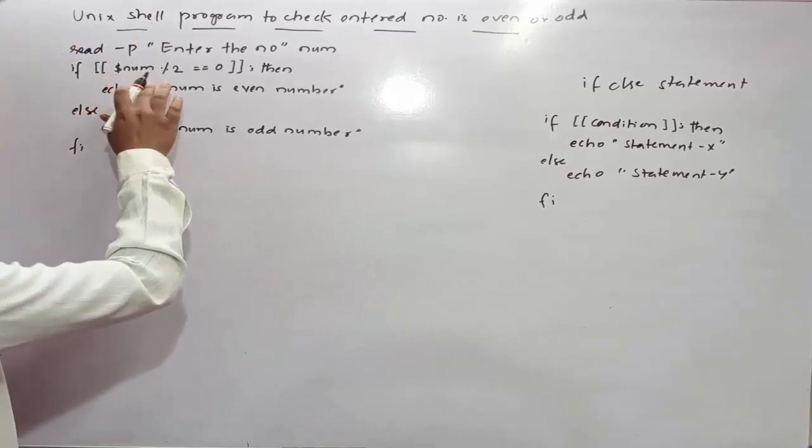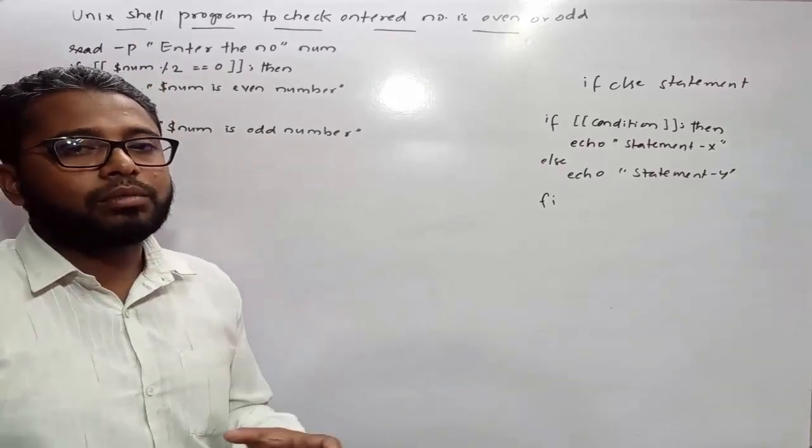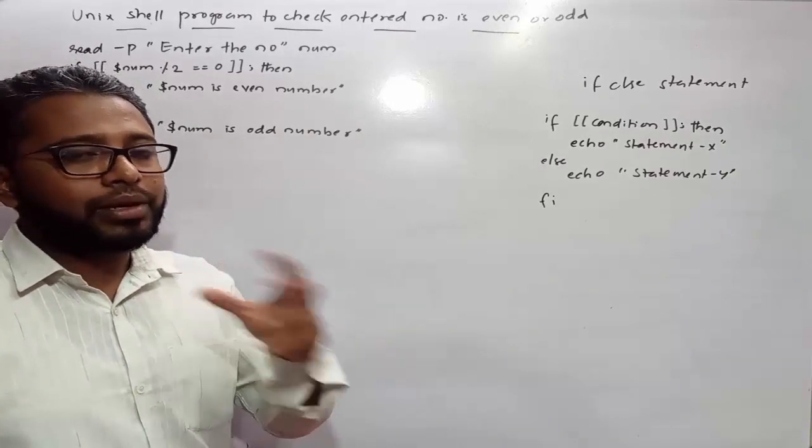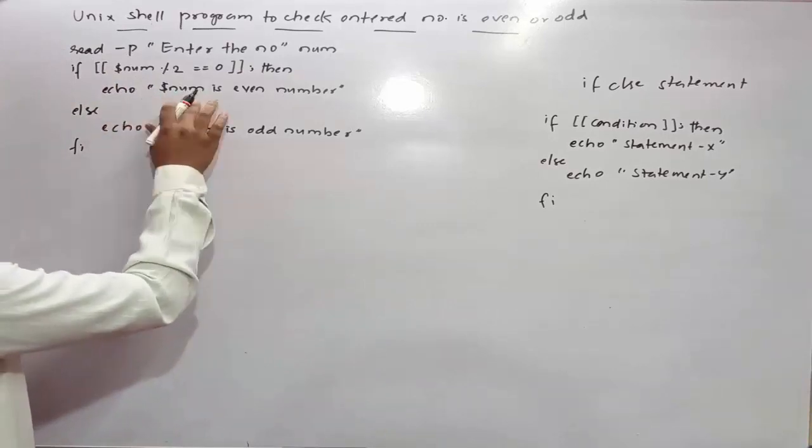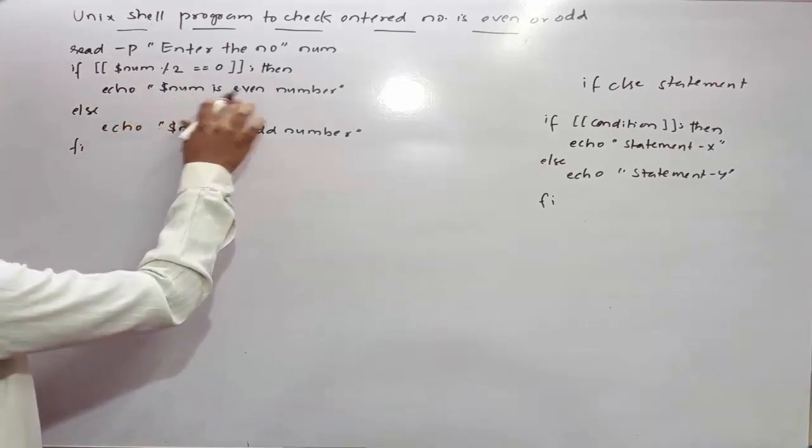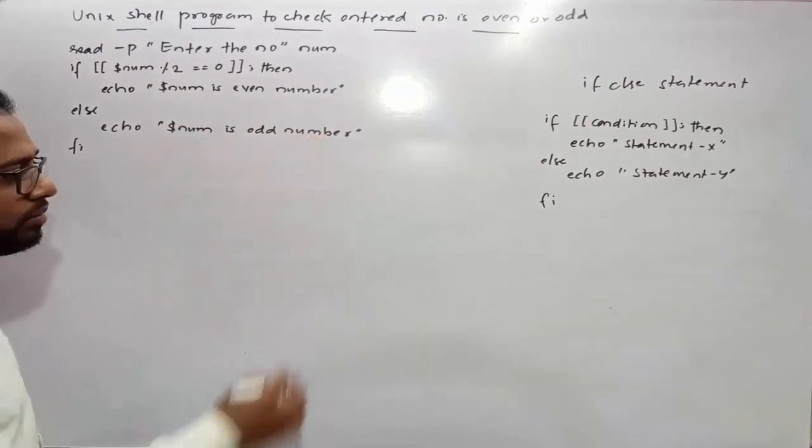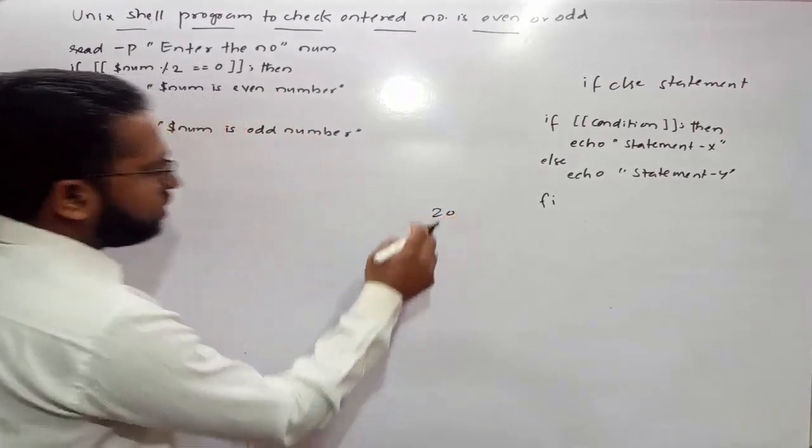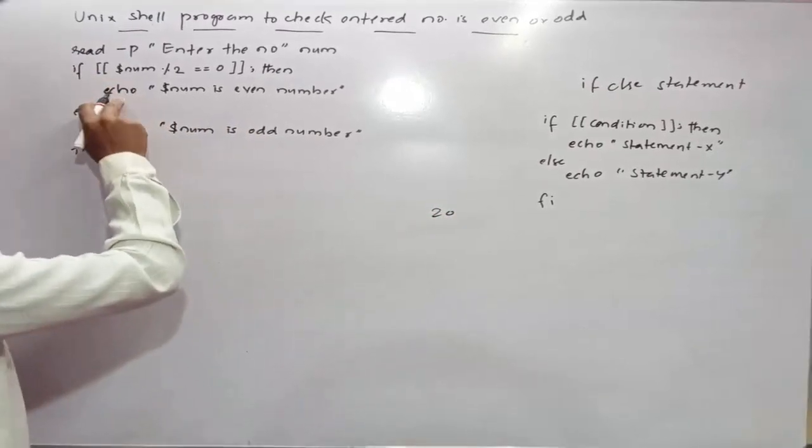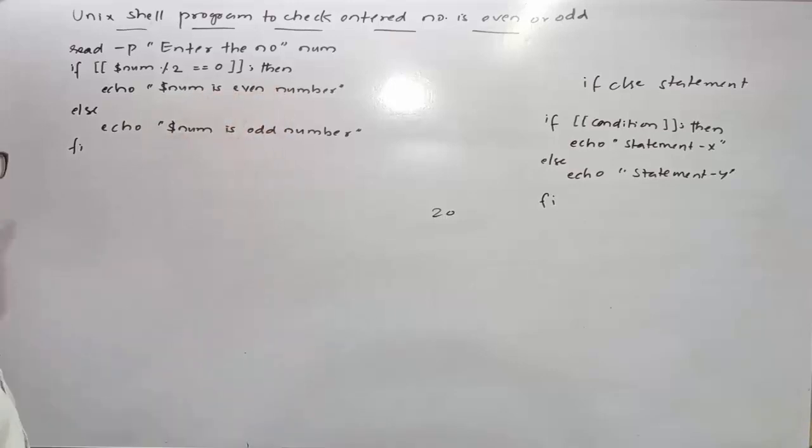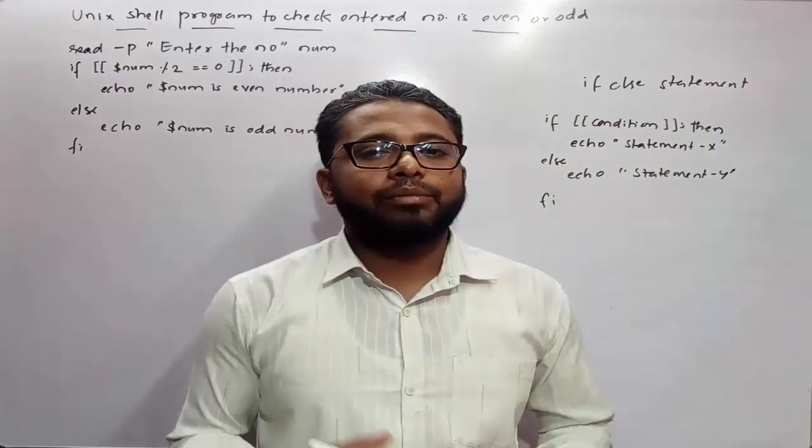Very simple program. We are just checking an if condition, and in that if condition we are checking whether the number gets divisible by 2. If the entered number gets completely divisible by 2 without leaving any remainder, then we will be displaying or executing this block: dollar num is even number, otherwise dollar num is odd number. Let us suppose user has entered 20. Since 20 gets divisible by 2 without leaving any remainder, control will come inside the if to execute this statement: 20 is even number. So that's how this if statement works.